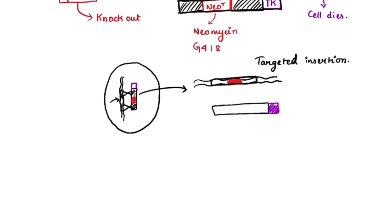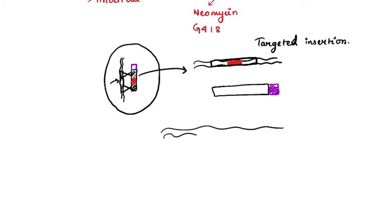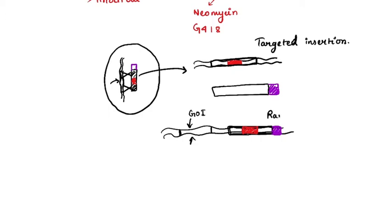Another thing can happen: let's say this is the DNA of the cell and this is the gene of interest we needed to knock out, but the construct that we sent in inserts itself at a random position on the DNA instead. So we have the thymidine kinase and the neomycin resistance gene between the two flanking regions, but inserted at a random place rather than the target site. We call this random insertion.